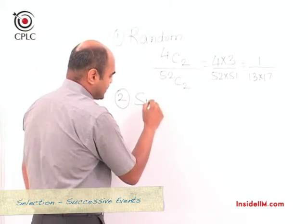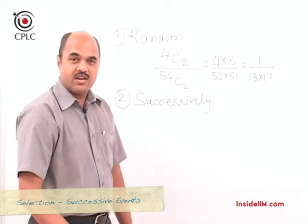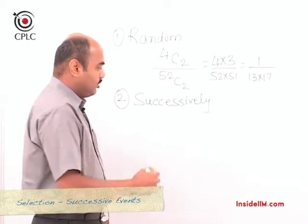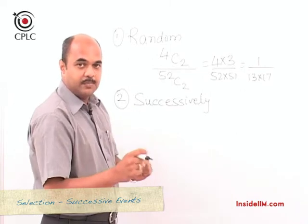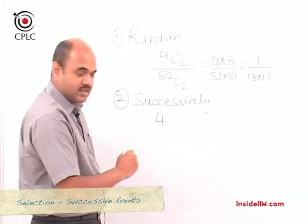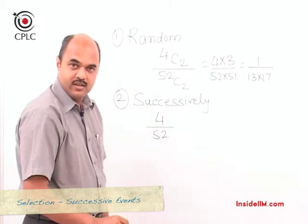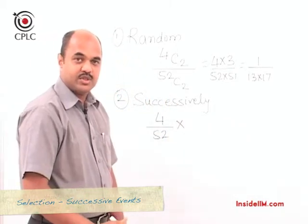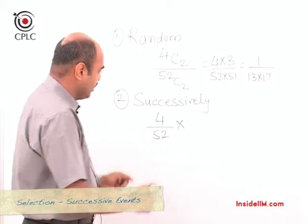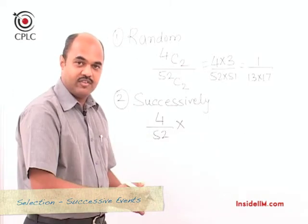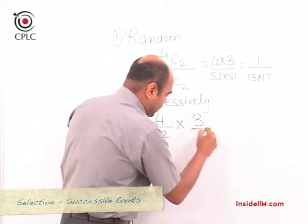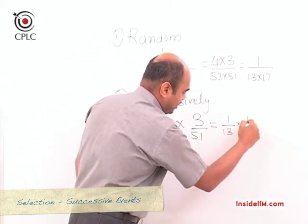If 2 cards are drawn successively one after the other, the probability is: P(first is a queen) × P(second is a queen). In any question involving successive events, it is always to be considered without replacement unless specified. So the first card drawn is kept out; from the remaining 51 cards, the probability the next is also a queen is 3/51. The answer is 4/52 × 3/51 = 1/13 × 1/17.